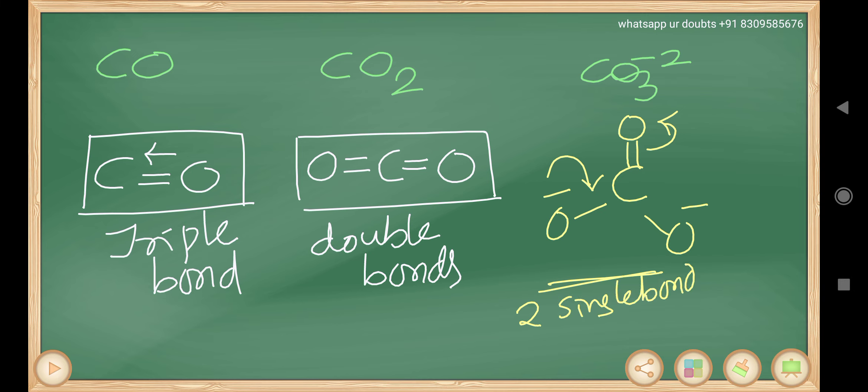Single bonds are longer than double bonds than triple bonds. So, carbon oxygen bond length increasing order is triple bond CO is minimum, double bond carbon dioxide is next, carbonate has two single bonds and one double bond, so this is the longest one.